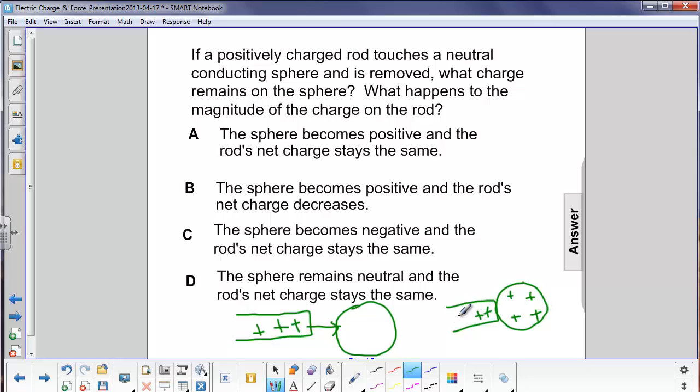So now the positive charge is not quite as dense because some of the charge left the rod and went over here to the sphere.